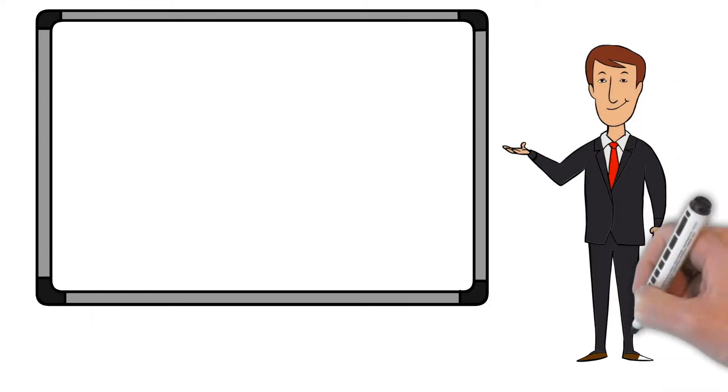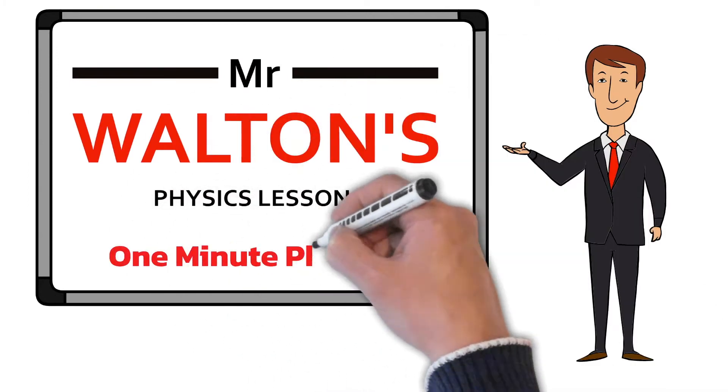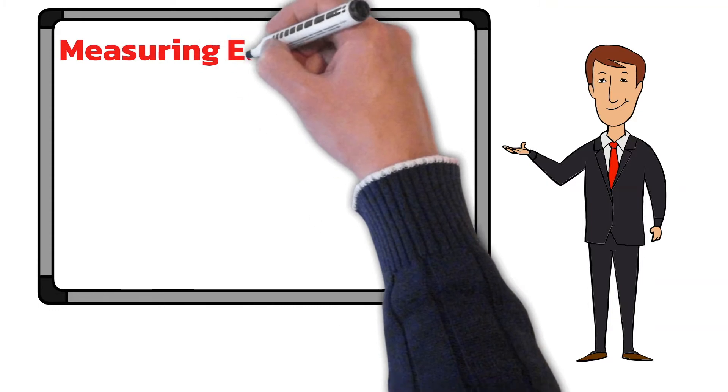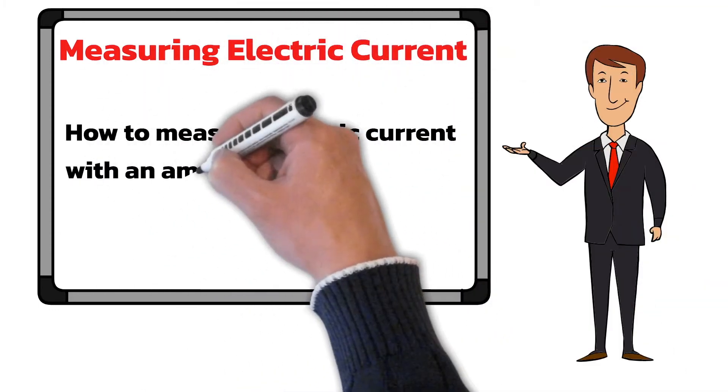Hello and welcome to Mr. Walton's Physics Lessons. In today's one-minute physics lesson we'll be looking at how to measure the electric current in a circuit. This is from the electricity topic of GCSE Combined Science and GCSE Physics.